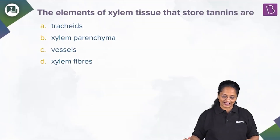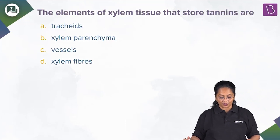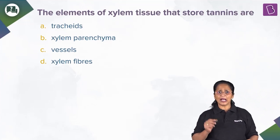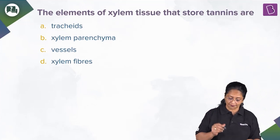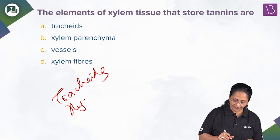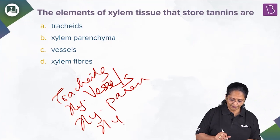Let us now solve this question: the elements of xylem tissue that store tannins are tracheids, xylem parenchyma, vessels, or xylem fibers? Xylem is a water-conducting complex tissue. It is made up of tracheids, xylem vessels (trachea), xylem parenchyma, and xylem fibers. Tracheids, vessels, and fibers are all dead because their cell walls are lignified. The only living component is xylem parenchyma.